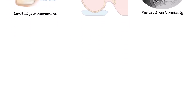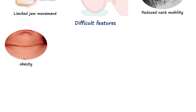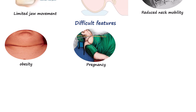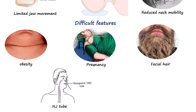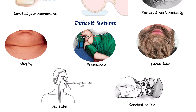The fifth D covers other difficult features that may not change airway anatomy but still complicate management. Massive obesity adds soft tissue bulk, impairs mask seal, and speeds desaturation. Pregnancy causes airway edema, reduced lung volumes, and higher oxygen demand, shortening safe apnea time. Facial hair can break mask seal, and devices like nasogastric tubes or cervical collars can obstruct access or positioning.